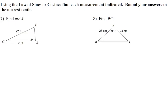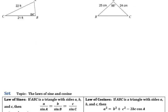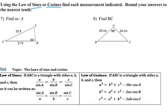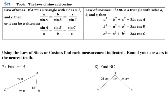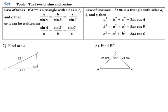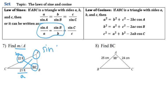Now, a little flashback to law of sines and cosines. For number 7, we're looking for the measure of angle A. To use the law of sines, we need a connection between a side and the angle opposite it. We have B and little b — that connection. So: sine of A over 21 feet equals sine of 84 degrees over 22.